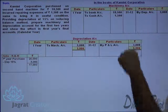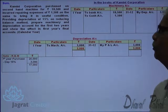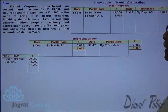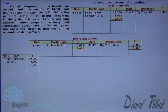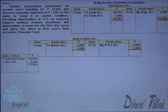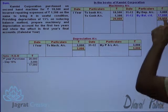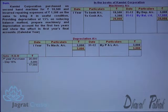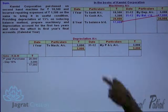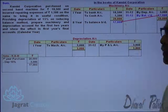Now I want to close the machinery account. The total of the debit side is $20,000. From that, the reduction in value — depreciation of $3,000 — is deducted. So the closing balance of the machinery account is $17,000. That becomes the opening balance for the second year.